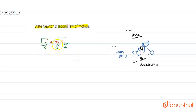We can say F is equal to ma. Newton's Second Law says that the greater the mass of the object being accelerated, the greater the amount of force needed to accelerate it.